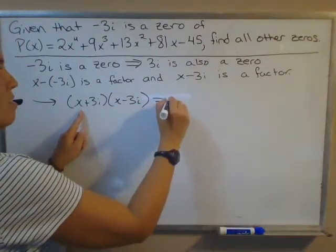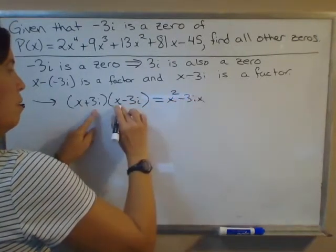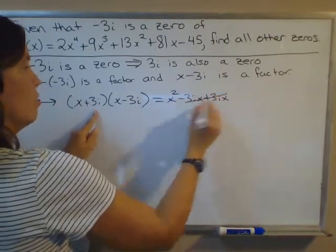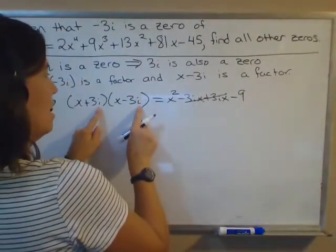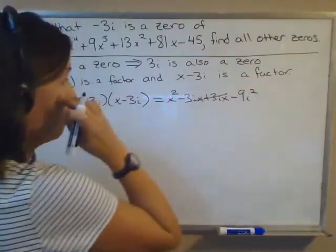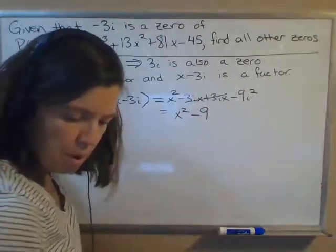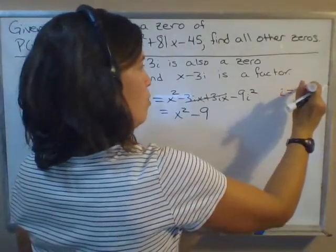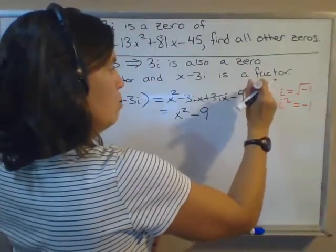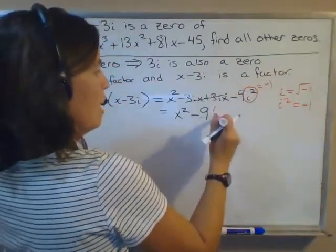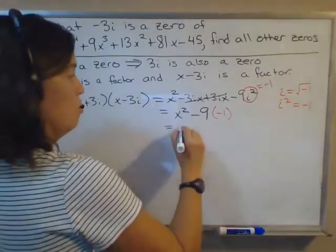I'll use the FOIL method: x times x is x^2, -3ix + 3ix cancel, and then -9 times i^2. That's x^2 - 9i^2. Remember that i is defined as the square root of -1, so i^2 equals -1. This is -9 times -1, so the product of these factors is actually x^2 + 9.